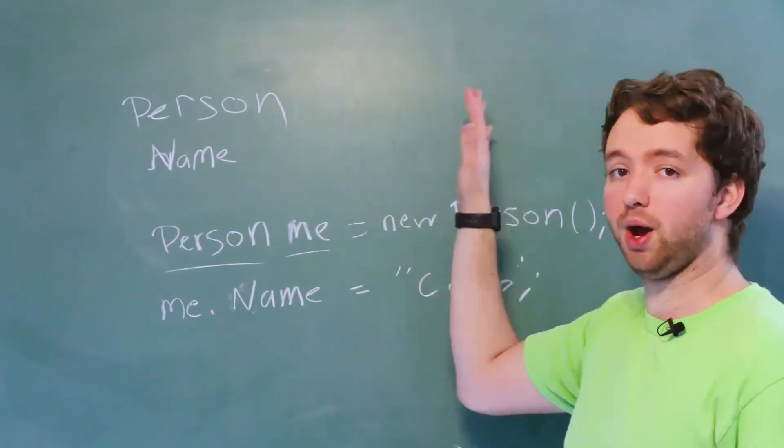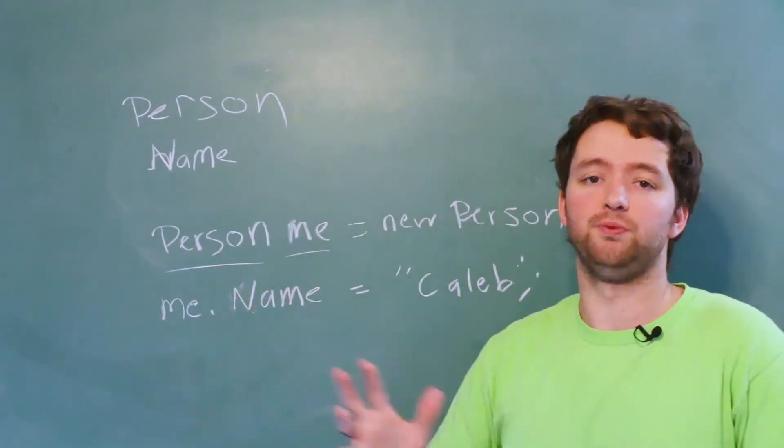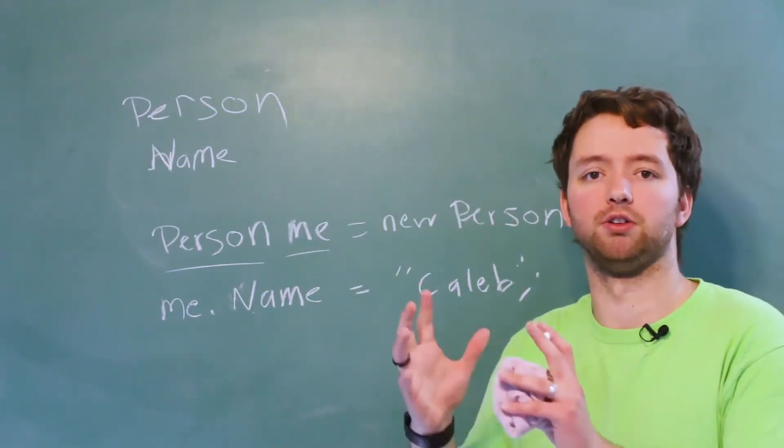So if we create another person, that person could assign the value Kayla or Samantha or John, whatever it might be in that particular object. Now when you create this inside of the class, it's going to look something like this.